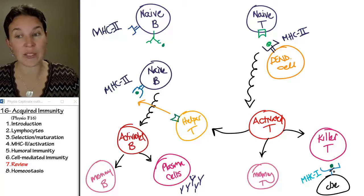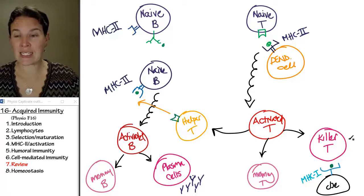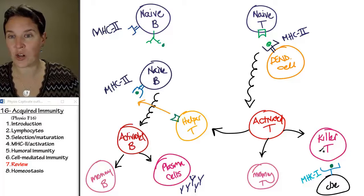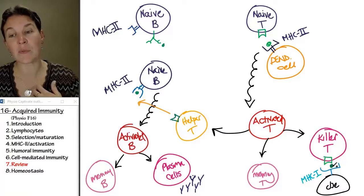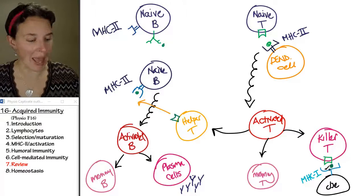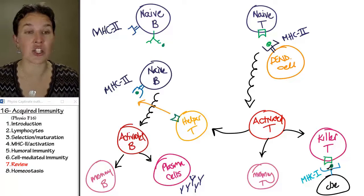And the killer T is what goes out with its T cell receptor. I should draw that in there because it does have one. Its little T cell receptor binds to MHC I on a host cell